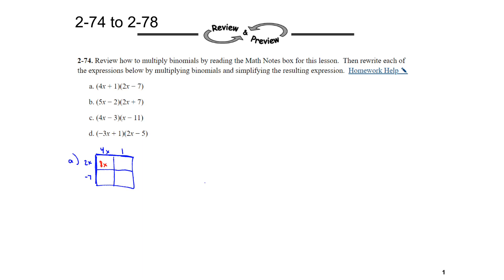And then what we can do is we can find the area of each individual rectangle and then combine them together. So 4x times 2x is 8x squared, 2x times 1 is 2x, 4x times negative 7 is negative 28x, and 1 times negative 7 is negative 7. And then we can combine our like terms, and that will leave us with 8x squared. And these two boxes here have a common term, so we'll add those together, and that'll be negative 26x, and then minus 7.